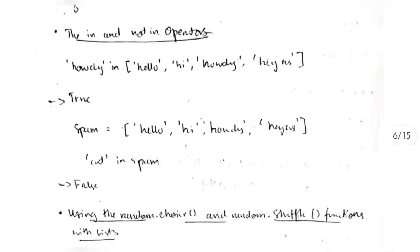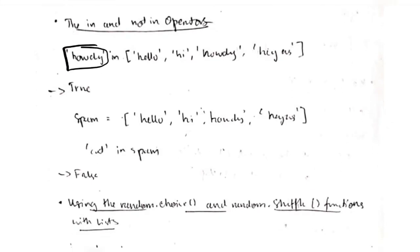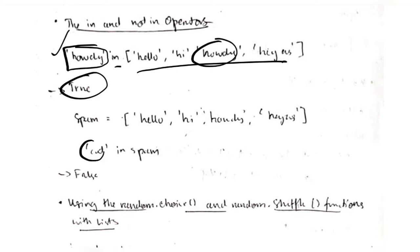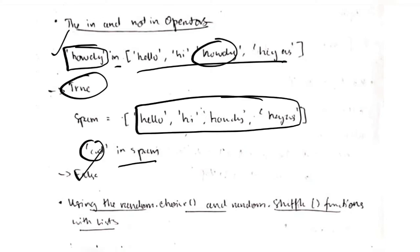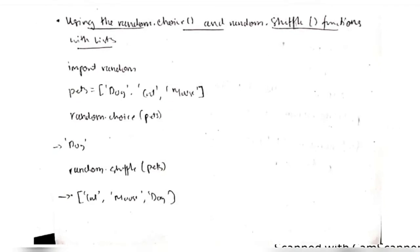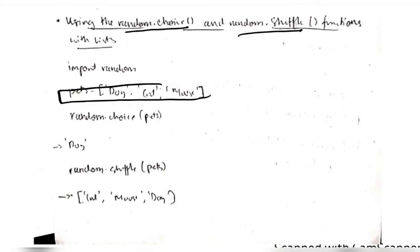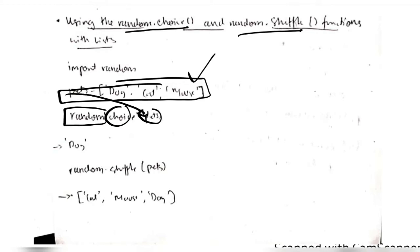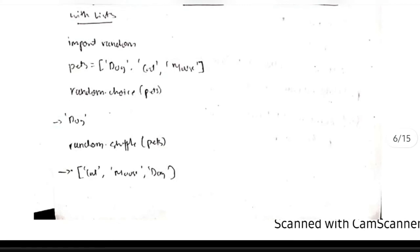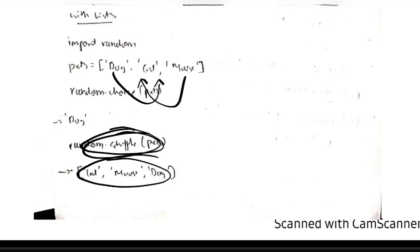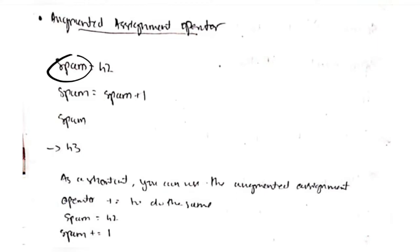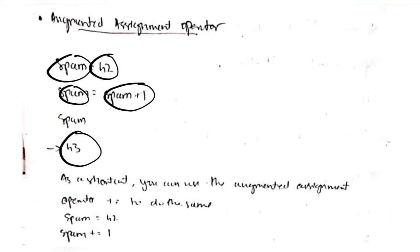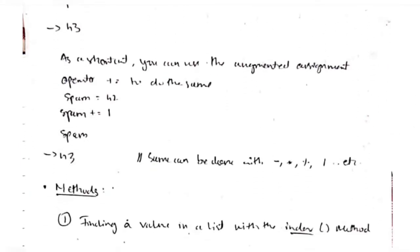We can use the 'in' and 'not' operators also. Suppose I write 'howdy' in this list — if it is present it will return True, else False. If 'cat' is not in spam, it will return False. We also have the random functions: random.choice and random.shuffle. In random.choice, you pass the list and it outputs a random name. random.shuffle interchanges the places of the elements. The augmented assignment operator means spam += 1, which is shorthand for spam = spam + 1, returning 43 from 42.